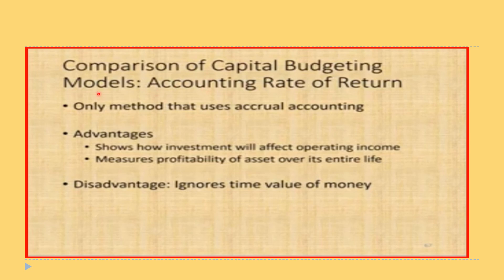Looking at the comparison of capital budgeting models for the accounting rate of return: it is the only method that uses accrual accounting, which is why we subtract depreciation when using cash flows — to convert from cash basis to accrual basis. The advantages are that it shows how an investment will affect operating income, and it measures profitability of an asset over its entire life.